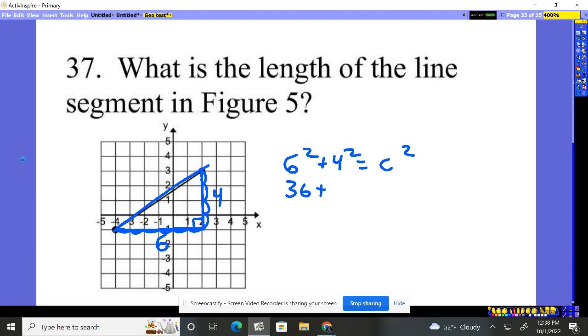6 times 6, 36. 4 times 4, 16. Put it together. What is that? 52 is equal to C squared. I take the square root now.